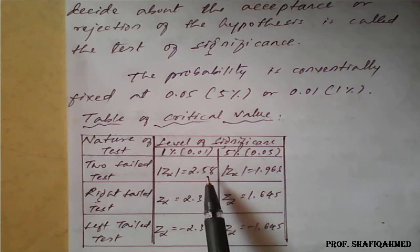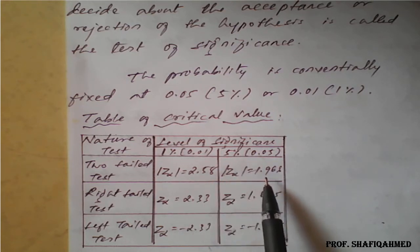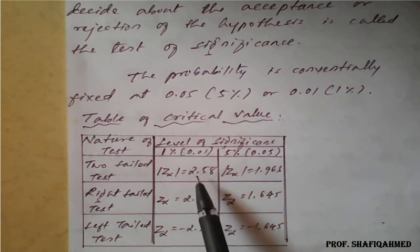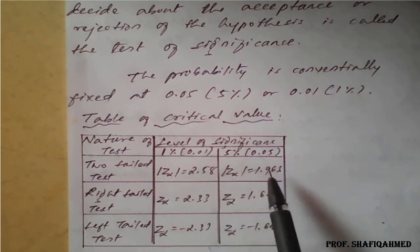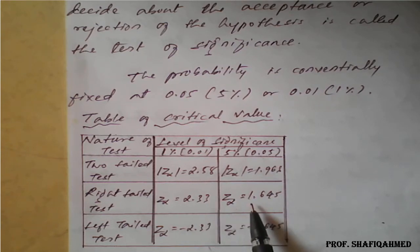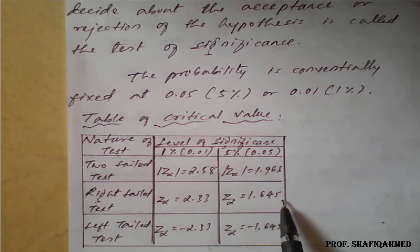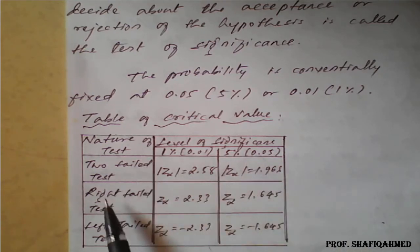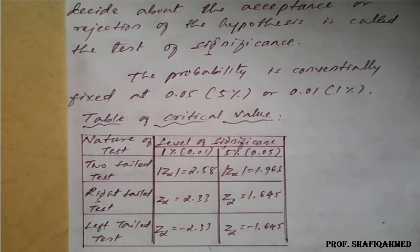If the computed value is less than the critical value, we will accept the hypothesis; if it is greater, we will reject it. For the right tail test, the critical value is 2.33 for 1 percent and 1.645 for 5 percent. For the left tail test, the values are negative: minus 2.33 for 1 percent and minus 1.645 for 5 percent.